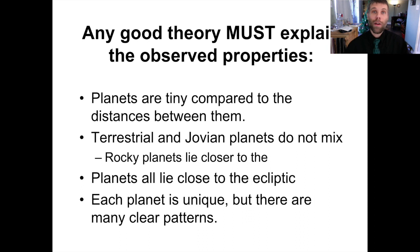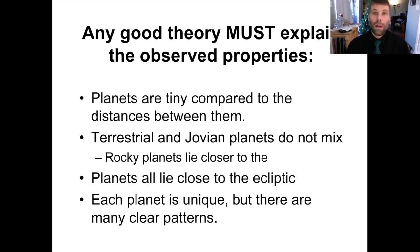Any theory we develop for planet formation has to be able to explain all of those observed things. The sizes of planetary orbits — planets are tiny compared to the distances between them, and orbit sizes go up as you work your way out from the Sun. The terrestrial and Jovian planets are separate from one another — terrestrial are close to the Sun, Jovian are far from the Sun. We see all of the planets orbiting close to the ecliptic, but we also have some variety, and we need to be able to explain all of that simultaneously with whatever idea of planet formation we develop.